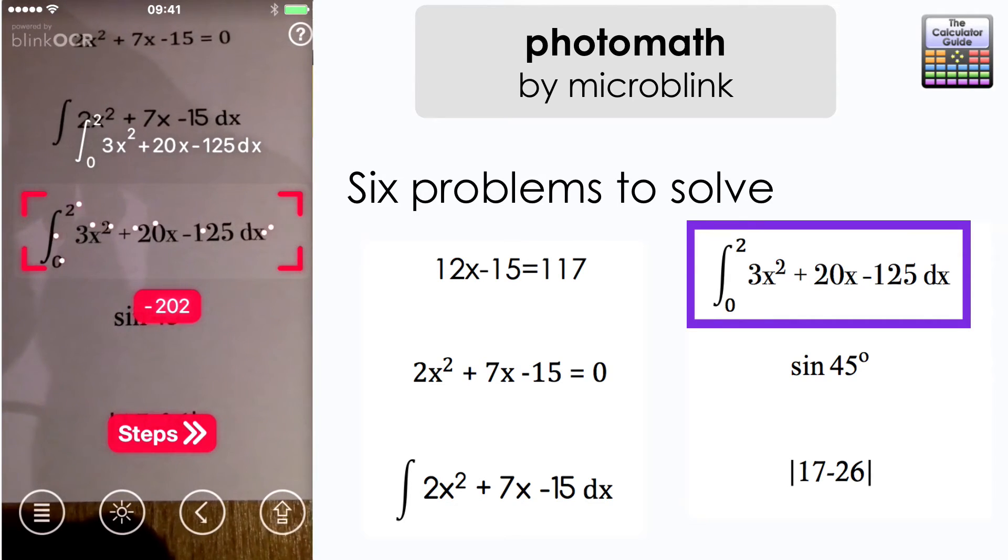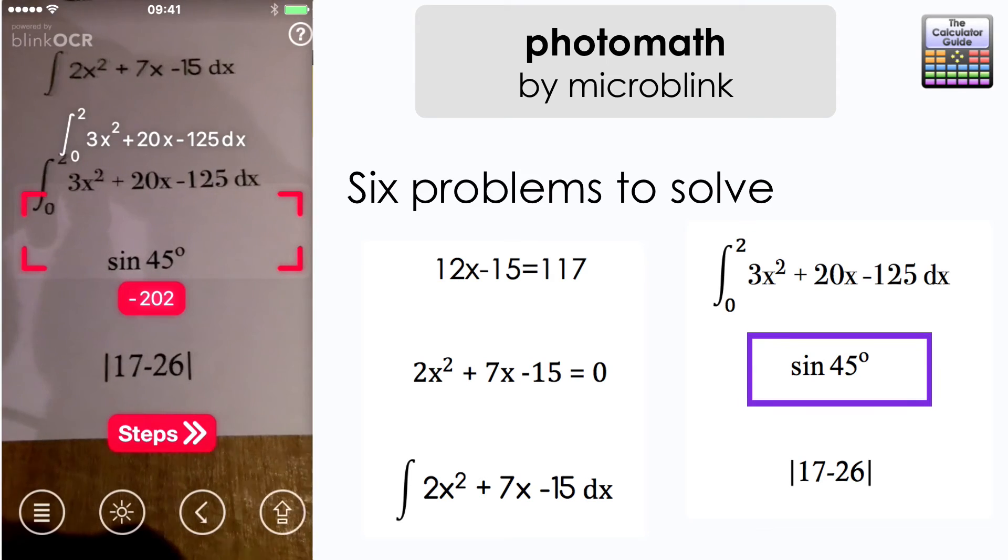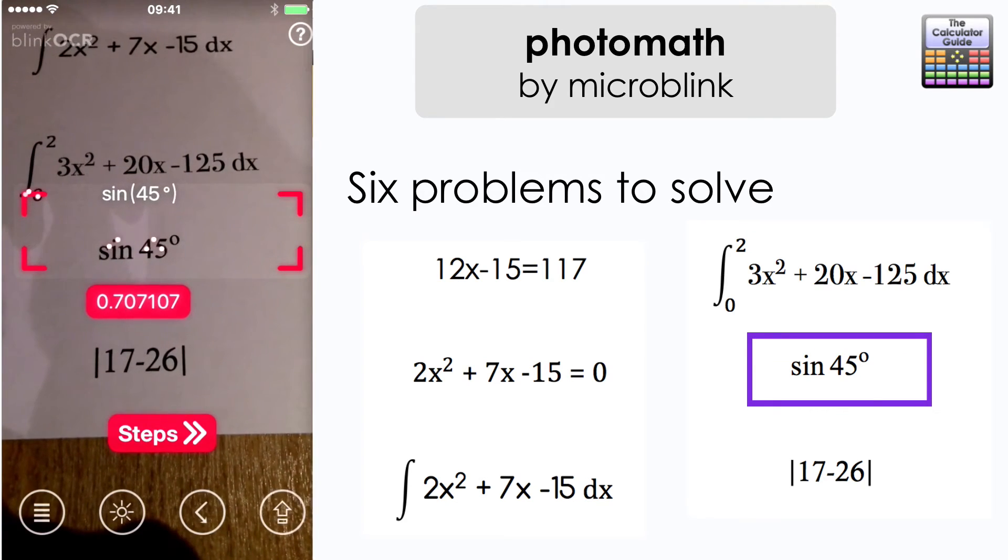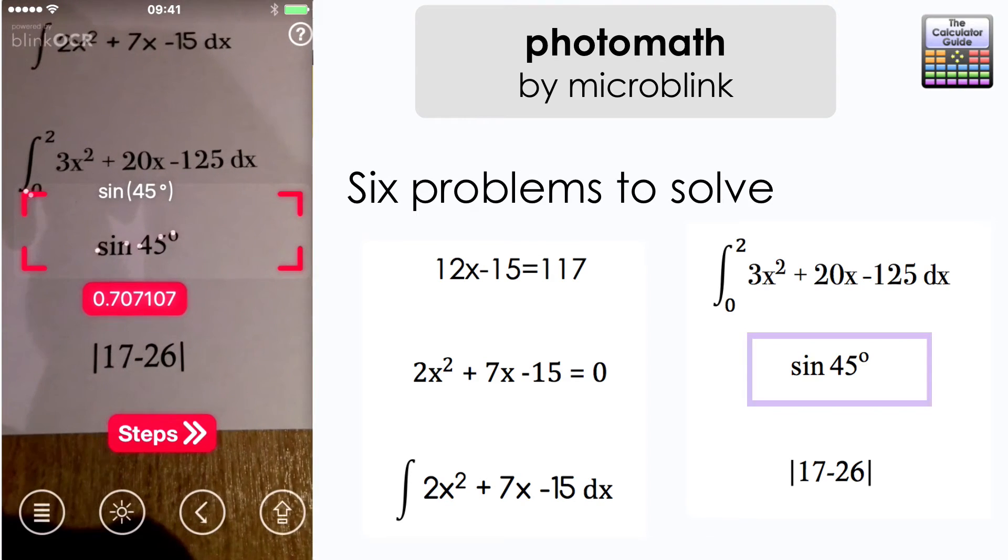Let's try a trigonometric value so the sine of 45 degrees. It's given us a decimal approximation there, not an exact answer unfortunately but the app still has worked that out correctly for us.